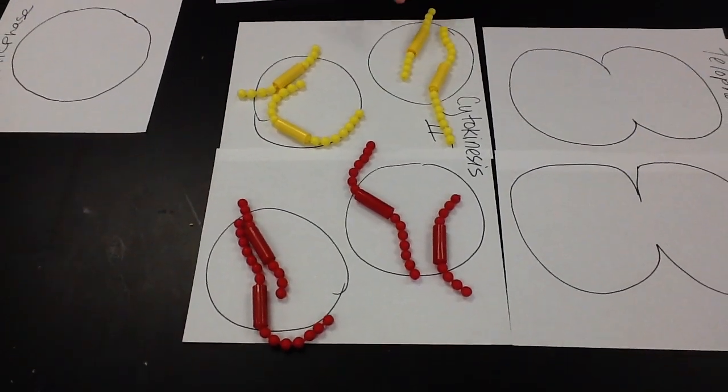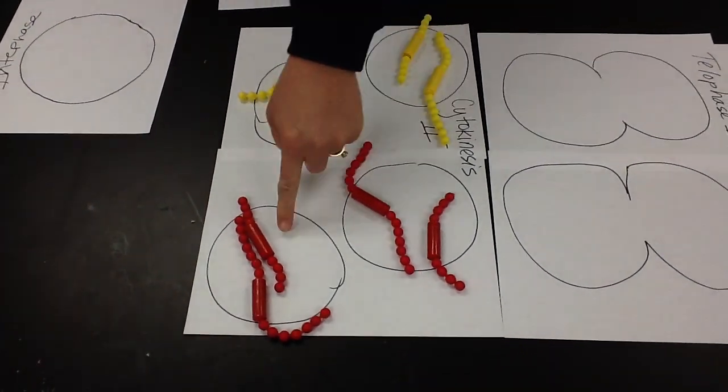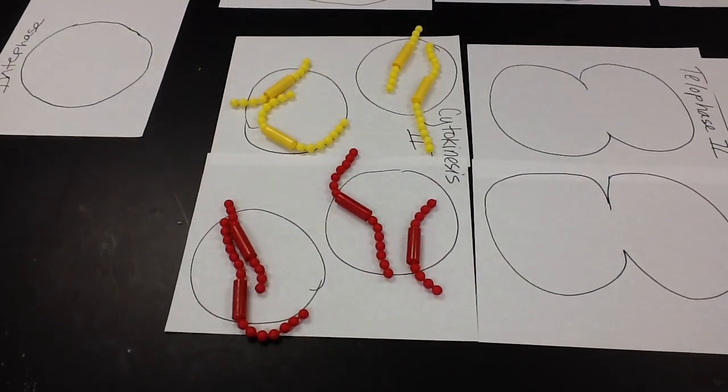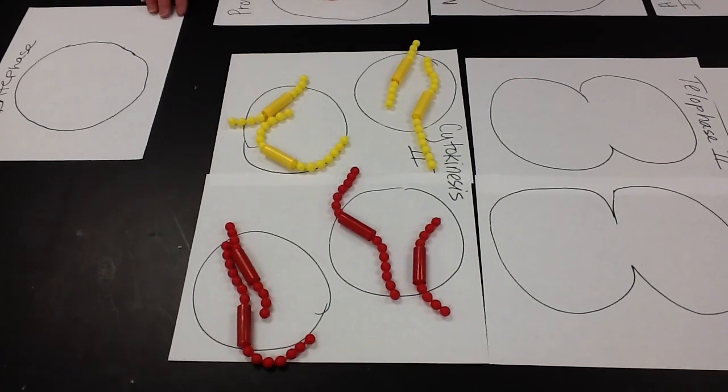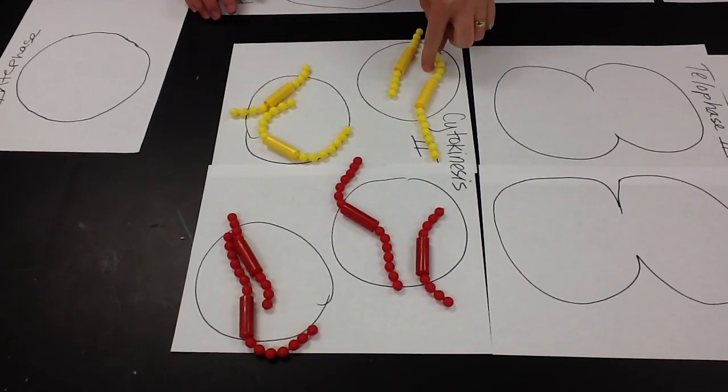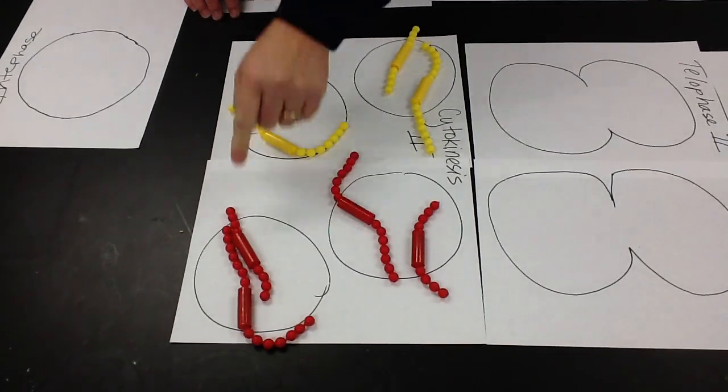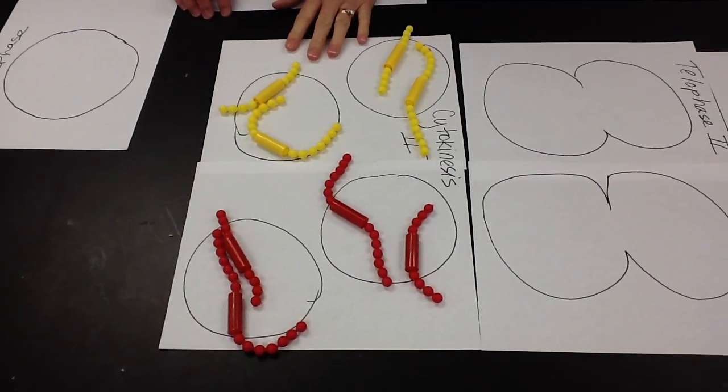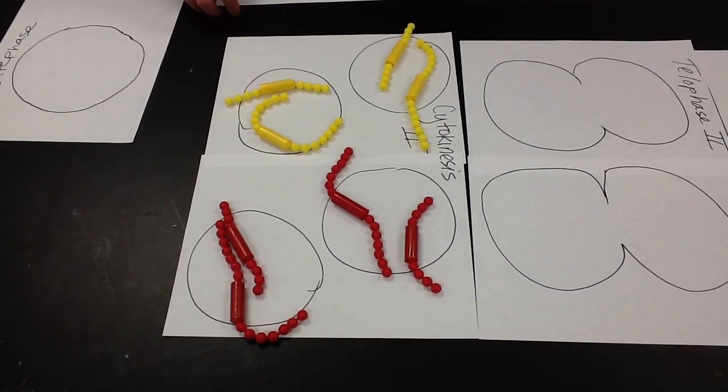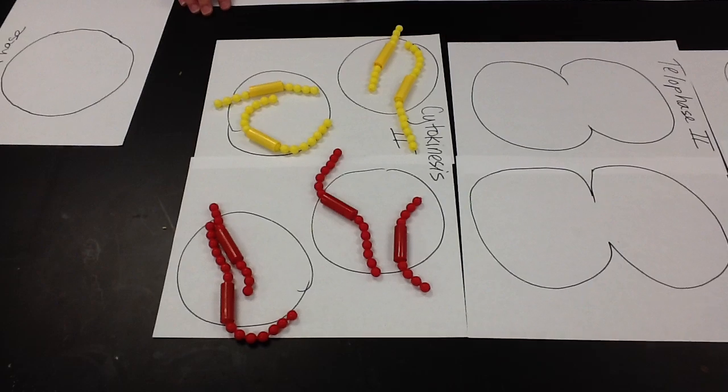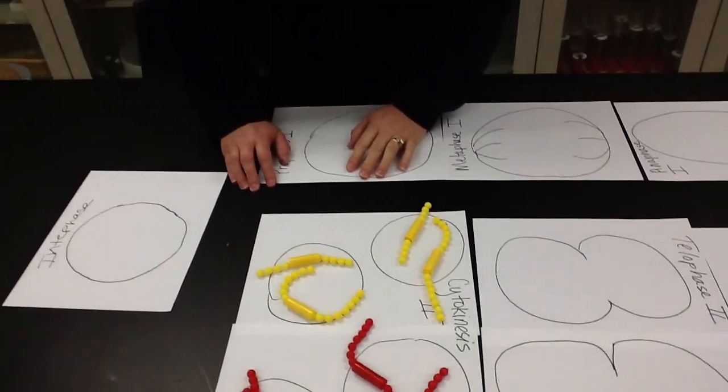And these two are together. So at the end, we have one, two, three, four what we call haploid cells. Remember, at the initial start in interphase, we had four chromosomes. Each one of these new cells has two. These new cells are called gametes and they are haploid in number. That means they have half the number as the original cell. And that is how you simulate meiosis and that's what you need to practice on your own as well. Thanks.